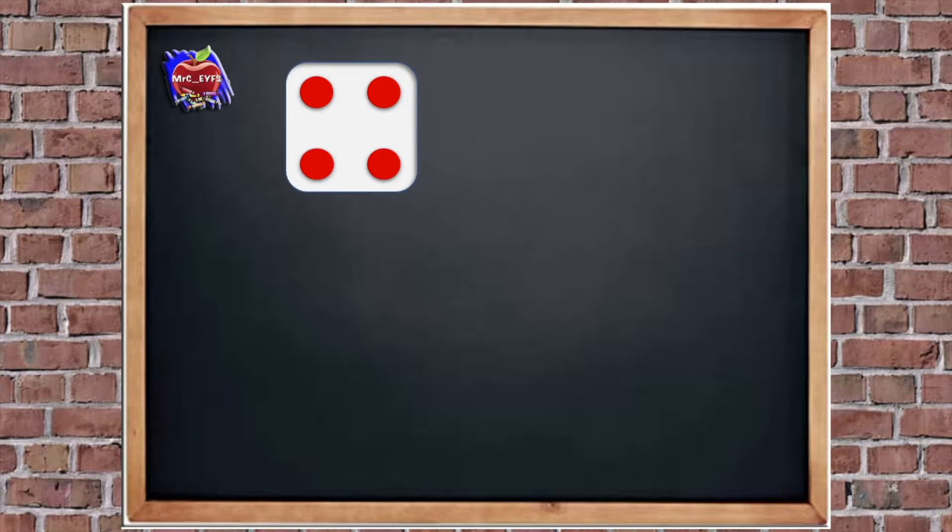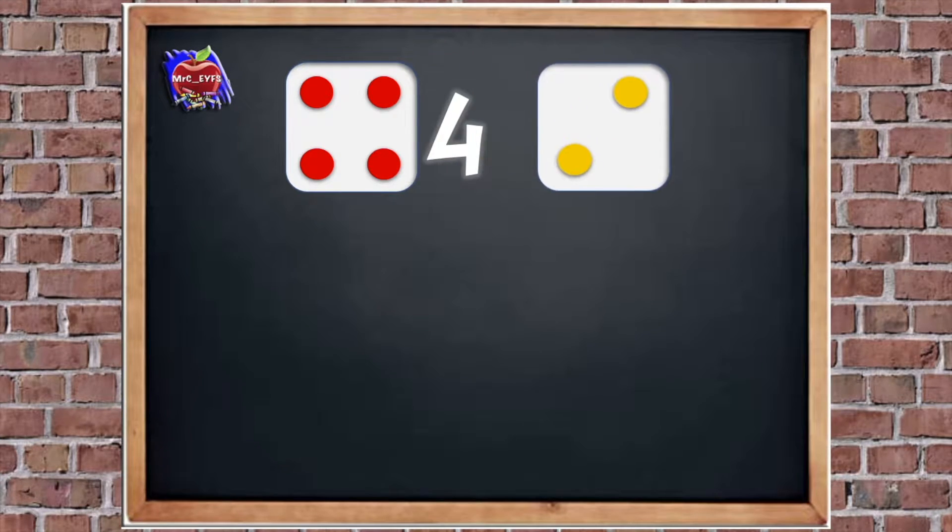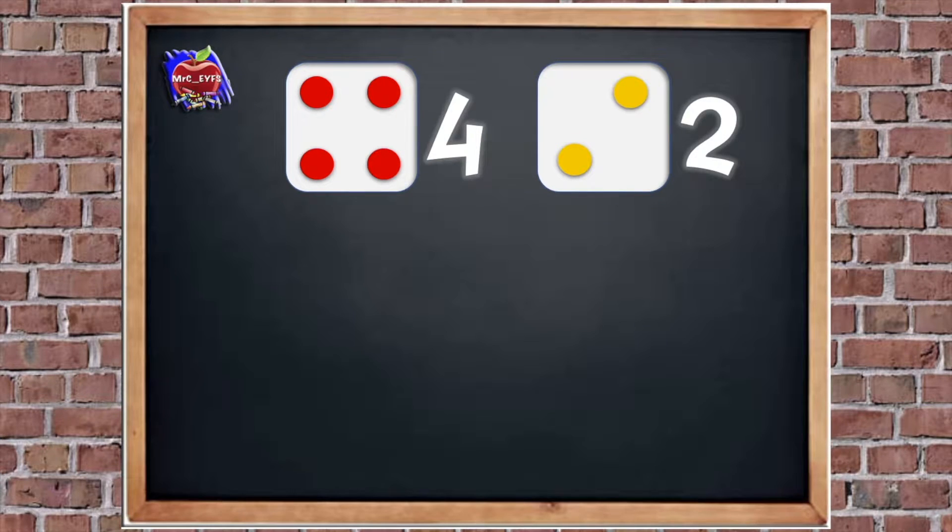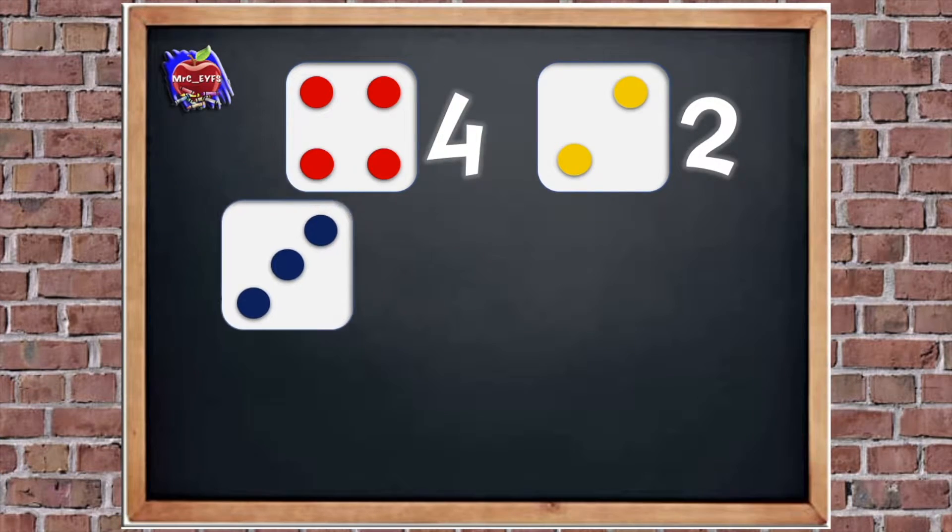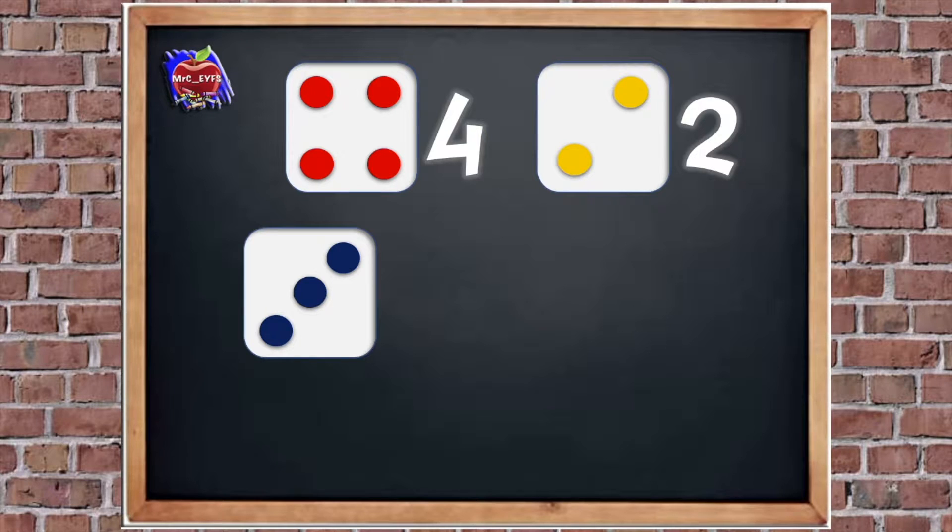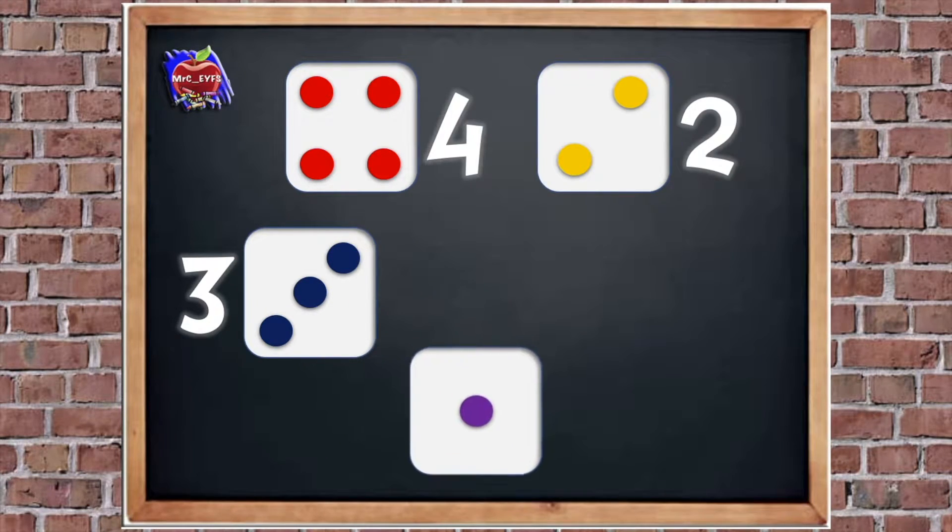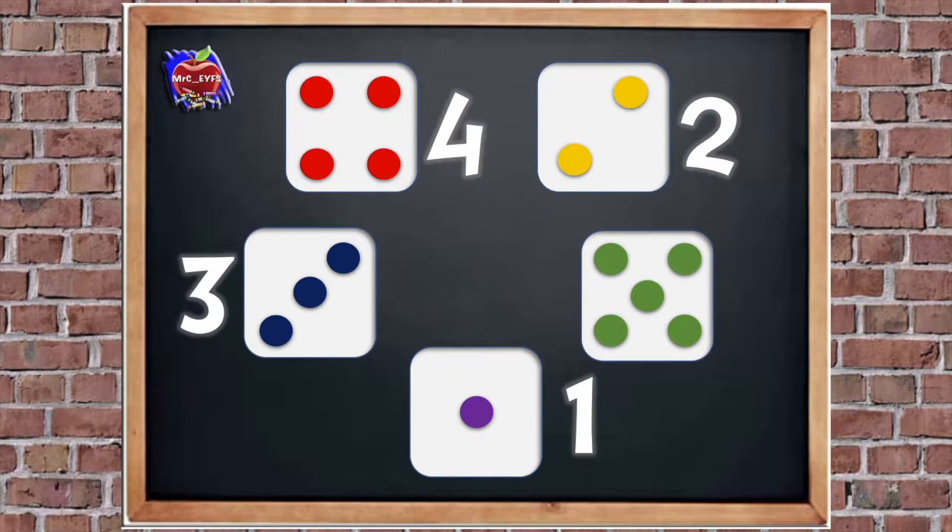Here's the first dice. How many spots are there? There's four. Remember, we've got to be really quick at this, so we can't count them. We just need to recognise those patterns. Let's have another go. How many? Two. Good job. Next one. How many? Three. Next one. How many? Easy. There's one. And the last one, how many? Five. Good job, you guys. Well done.